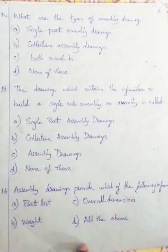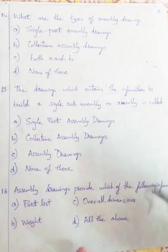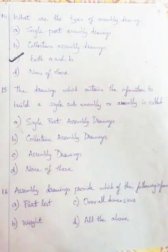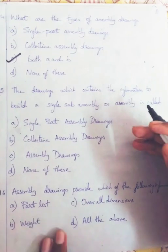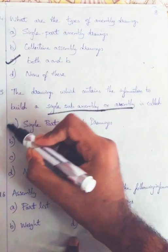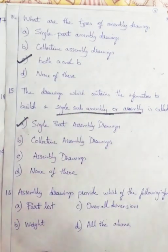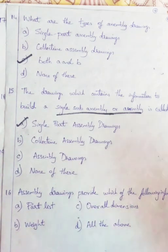Question 14: What are the types of assembly drawings? There are two types: single part assembly drawings and collective part assembly drawings, so we go with both A and B, that is Option C. Question 15: Drawings which contain the information to build a single sub-assembly or an assembly are called single part assembly drawings, Option A. Question 16: The information provided by drawings includes part list, weight, and overall dimensions — all of these, Option D.